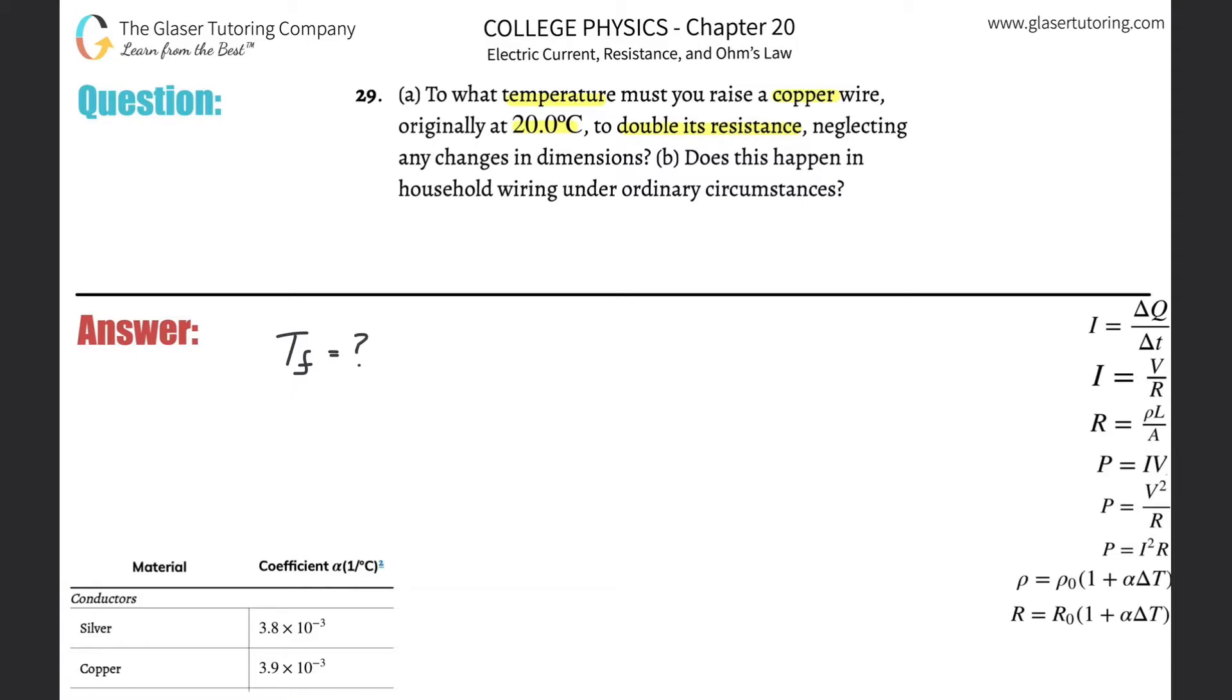That's the question. They told us an initial temperature of 20 degrees Celsius. They also told us that it's copper wire - we might not know yet what to do with that, probably important but let's just forget about that part for a second. It then also tells us that the resistance is going to double. It doesn't actually give us figures, it doesn't say it goes from 10 ohms to 20 ohms or 50 ohms to 100 ohms or whatever the case is.